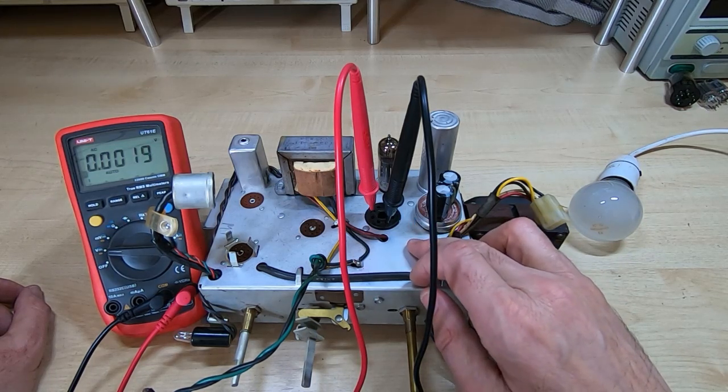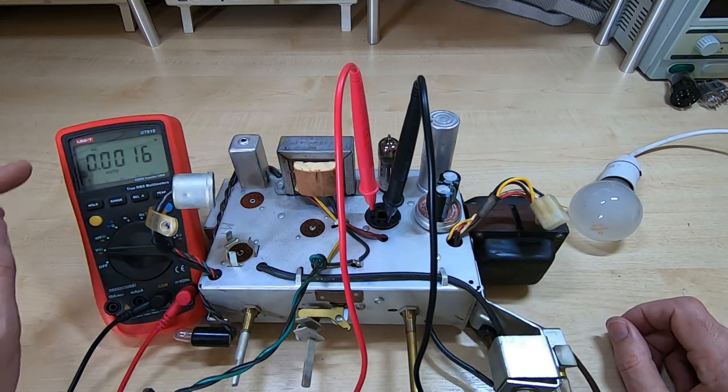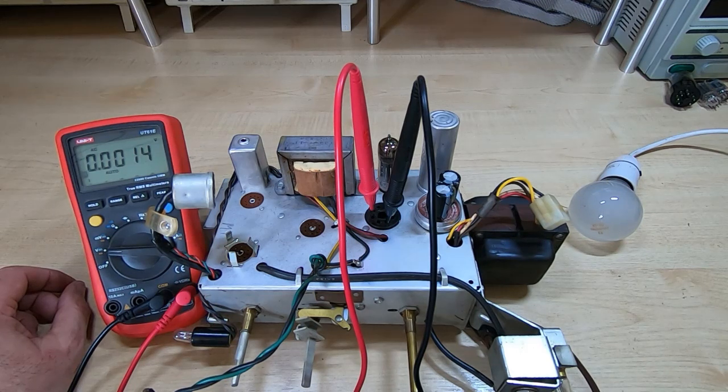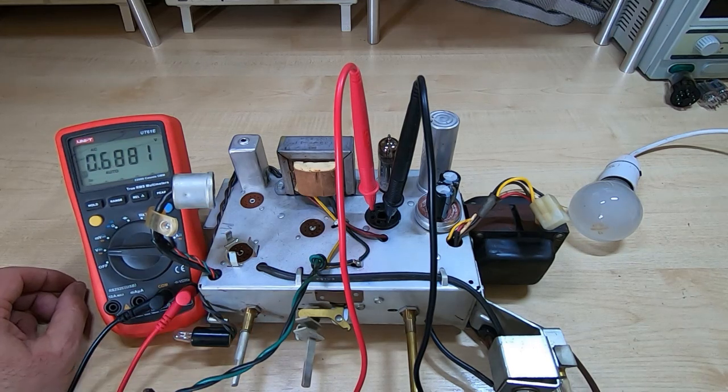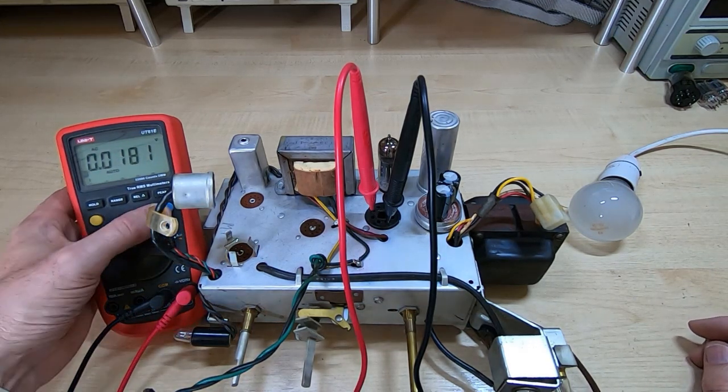Well, I'll turn it off before the tube has a chance to warm up. I want to actually monitor the B plus as it rises, but I want to first check to see what the heater voltage is. Okay, so as you can see, it's come down quite a lot and it will come down even further once the other tubes are in.